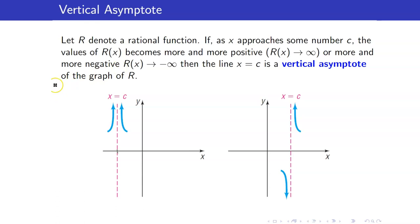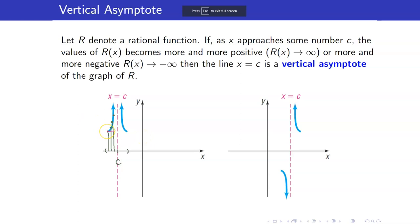Suppose that we have a rational function. As x approaches some number c, the values of R of x become more and more positive, or more and more negative. We say that the line x equals c is a vertical asymptote. So in this example, this is our c. If you look at the graph from the left of c, the x coordinates get closer and closer to c, and the y coordinates get bigger and bigger — they become more and more positive.